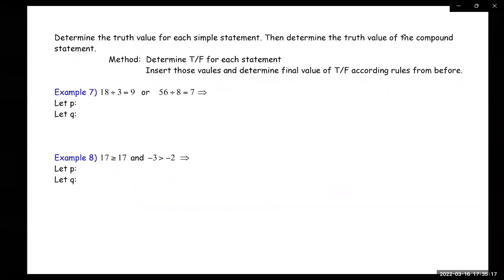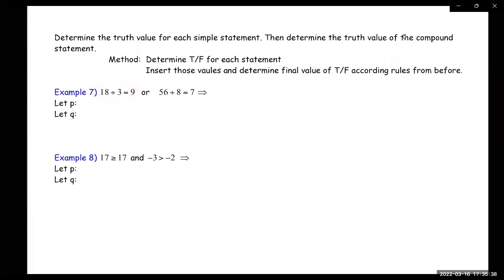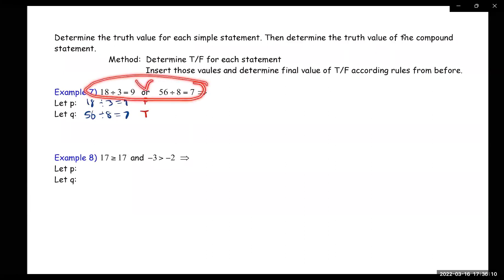All right. Determine the truth value for each simple statement, then determine the truth value of the compound statement. Let's look at the first one. P is '18 ÷ 3 = 9' — that's false, because 18 ÷ 3 is 6. Q is '56 ÷ 8 = 7' — that is true. The statement we're looking at is P∨Q.